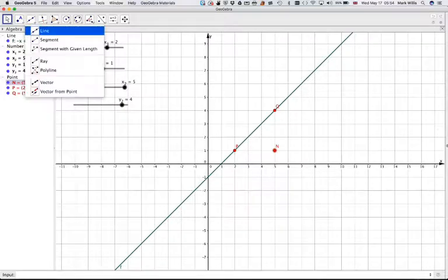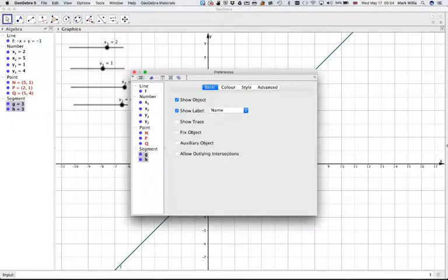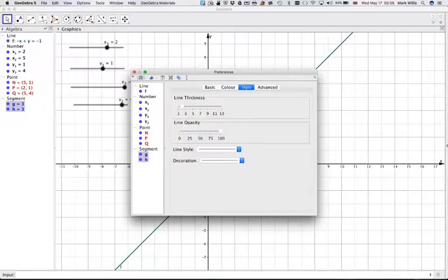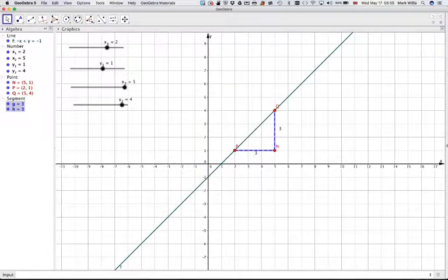We want some line segments now joining the points, so there to there and there to there. For those two line segments, we probably want to make them dashed. Object properties, color—let's make them blue—make the style thicker, and then make it a dashed style as well. Also, we don't want the name on there, but it might be good to have the value. That gives me the length. Press OK, then I've got the value.